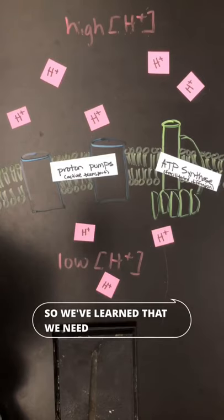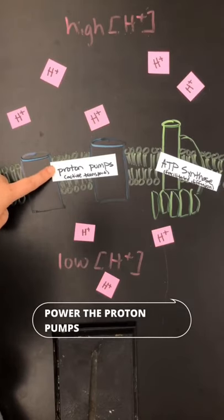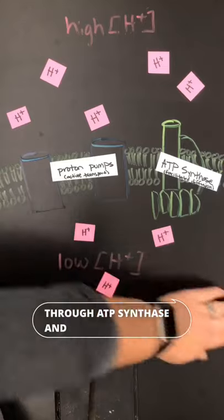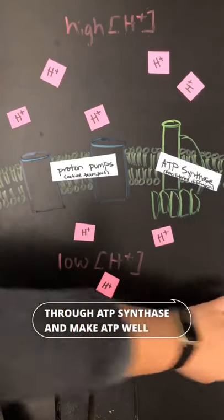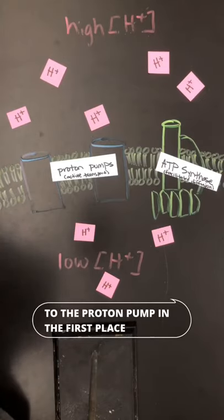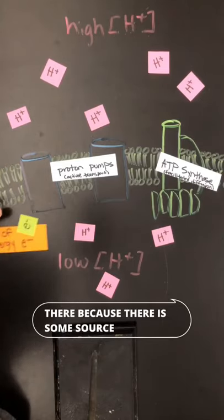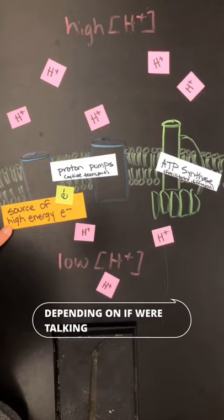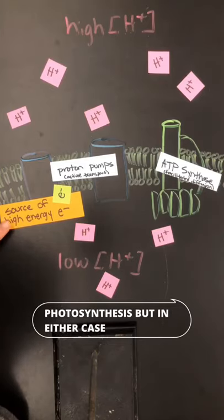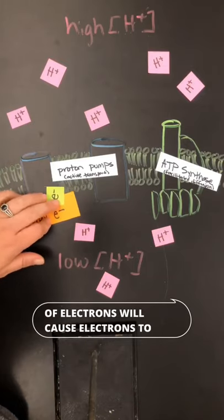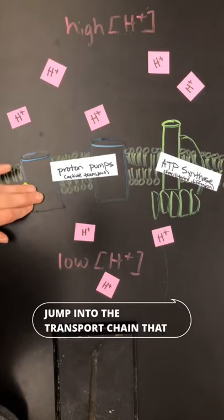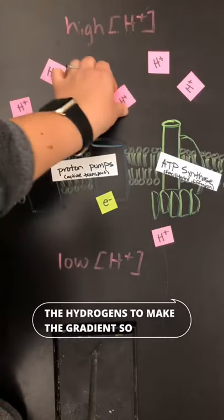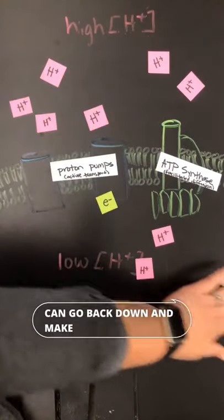So we've learned that we need electrons to power the proton pumps, which move hydrogen ions against their gradient so that they can go back down their gradient through ATP synthase and make ATP. How do the electrons get to the proton pump in the first place? They get there because there is some source of high energy electrons. This is going to be different depending on if we're talking about respiration or photosynthesis, but in either case, this source of electrons will cause electrons to jump into the transport chain to power these proton pumps, move the hydrogens, make the gradient, and go back down to make ATP.